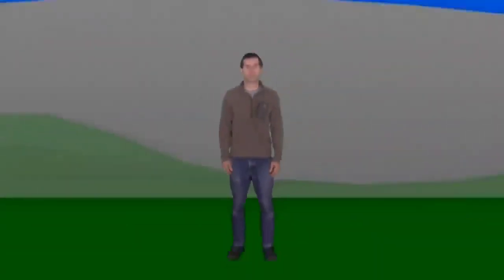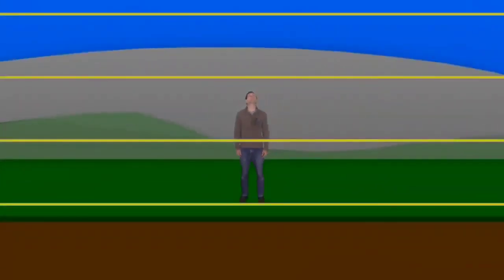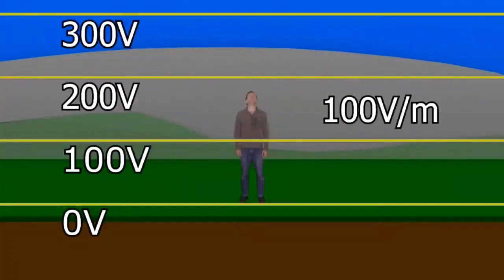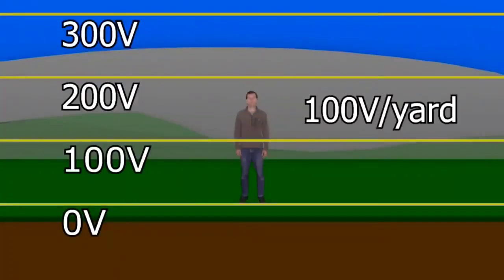Electricity in the atmosphere. For every meter you go up in the air, the voltage increases by around 100 volts, or around 100 volts per yard.